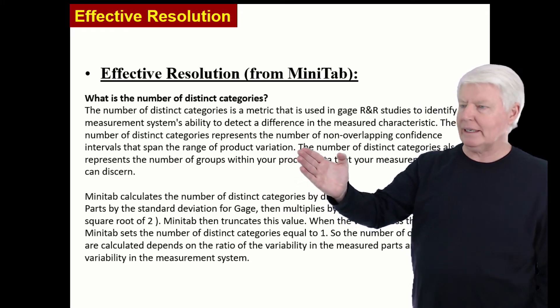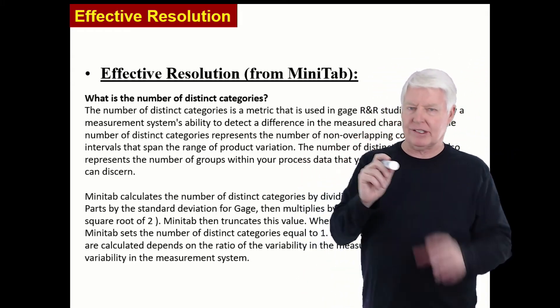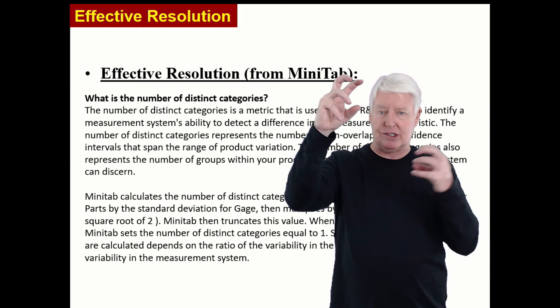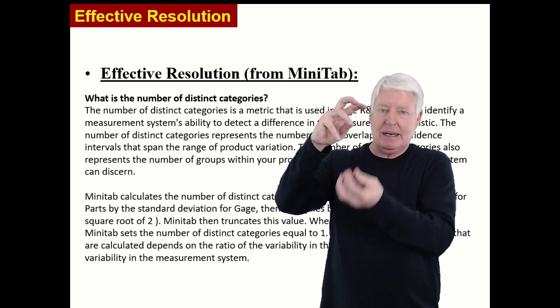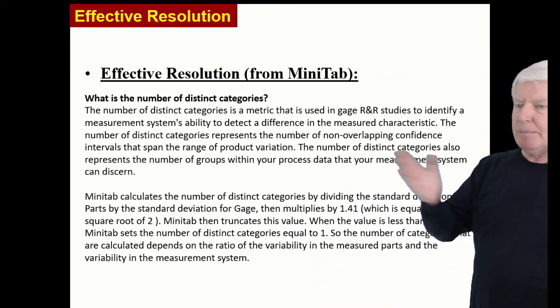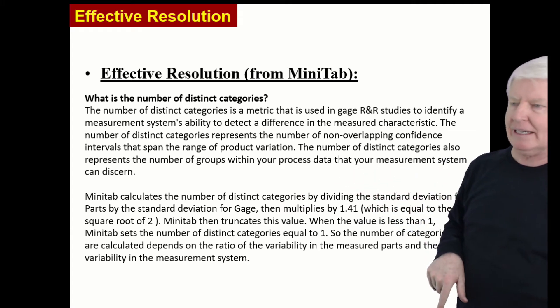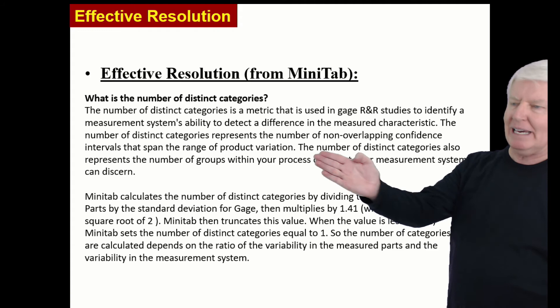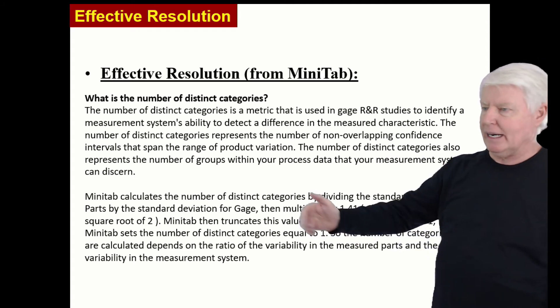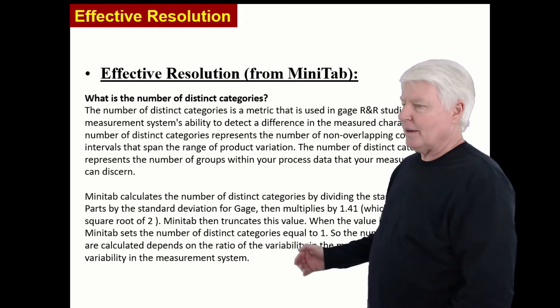The number of distinct categories represents the number of non-overlapping confidence intervals that spans the range of product variation. So what we're going to compare here is product variation. Remember, we had sigma of the parts, right? And then we had sigma of measurement. So they're comparing sigma of the parts to sigma of the measurements, seeing how many times the sigma of measurement fits into sigma parts. That's really what it's telling us here. The number of distinct categories also represents the number of groups within your process that your measurement system can discern. So that was my definition, number of columns on your histogram, number of distinct categories, columns on the histogram, also represents the number of groups within your process data that your measurement system can discern.